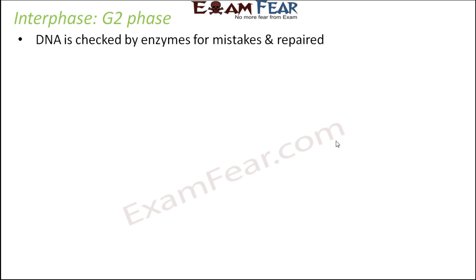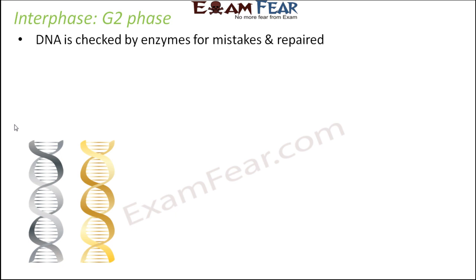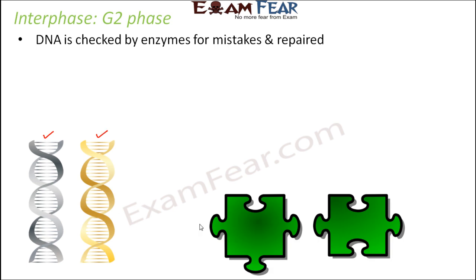That is why it is very important to test if the DNA has been copied correctly, and therefore this G2 step comes after the synthesis phase. In the synthesis phase the DNA is copied, and only after that can you check if it was copied correctly. The original DNA and the copied DNA must have exactly the same sequence of nucleotides. Small changes — like a portion present in one but missing in the other — need to be identified and repaired in this phase.